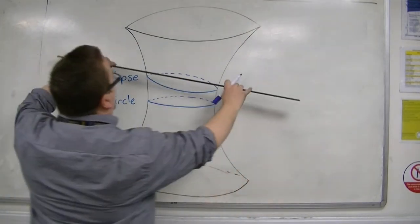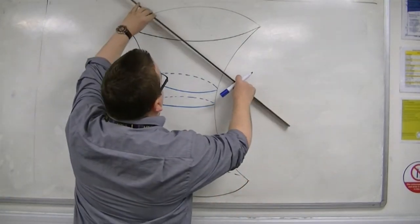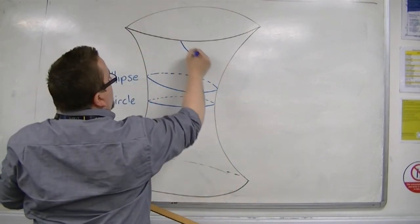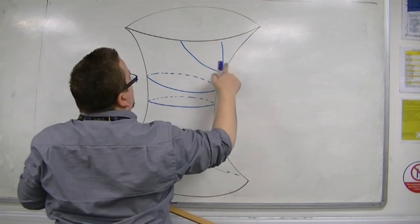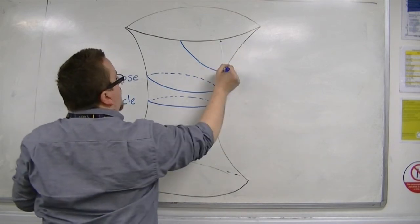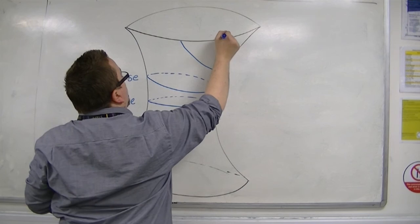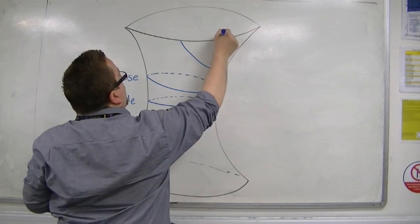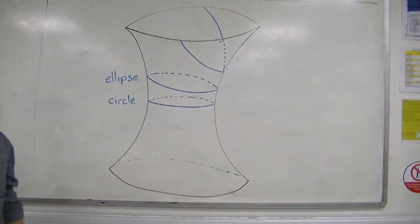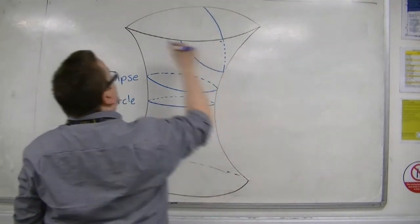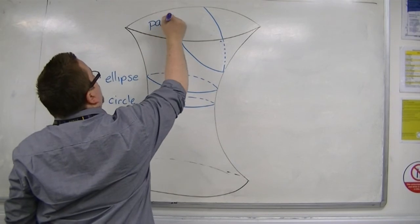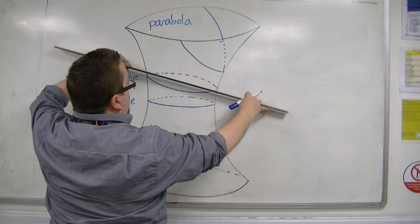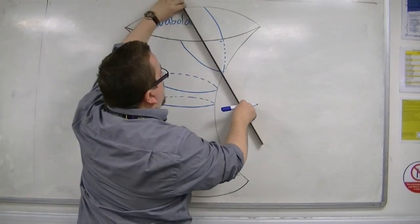If you take this a little bit further, so you get up to this stage, then what you find is that you get a parabola. So circle, ellipse, and then you get a parabola.